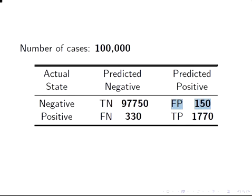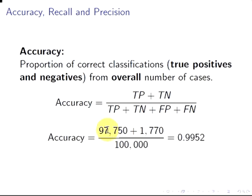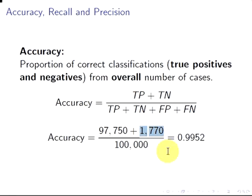Accuracy is the proportion of correct classifications — that is, the true positives and true negatives — from the overall number of cases. We have 97,750 true negatives and 1,770 true positives. Working that out gives us 0.9952, so 99.52% accuracy with this classification system.